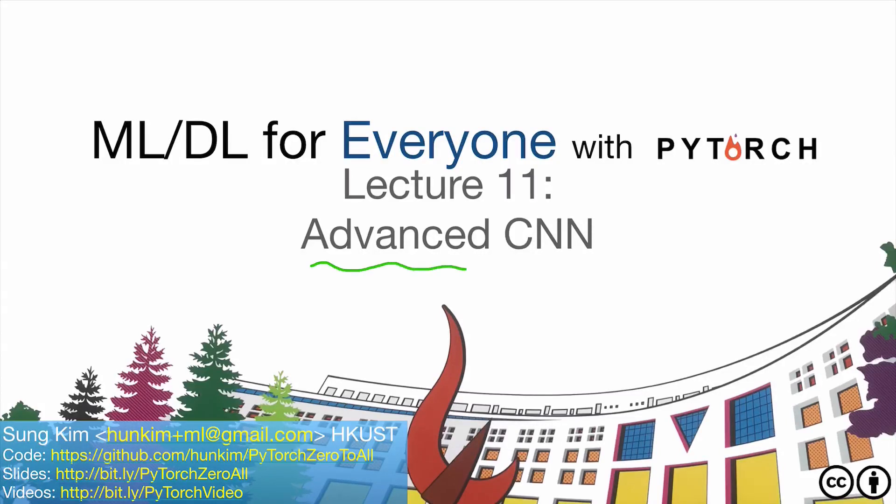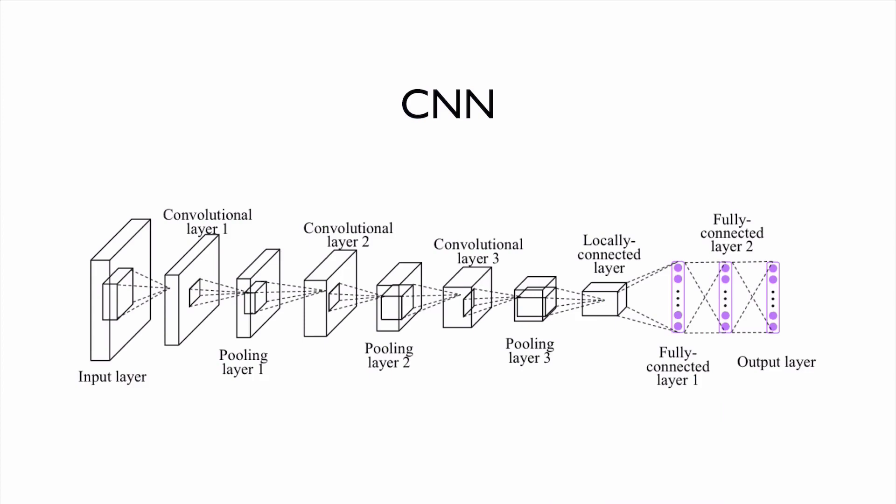In this lecture, we are going to talk about advanced CNN. From last lecture, now we can understand what is convolution and what is pooling, and we can connect them together with multiple convolution layers, and then finally we can connect with fully connected layers.